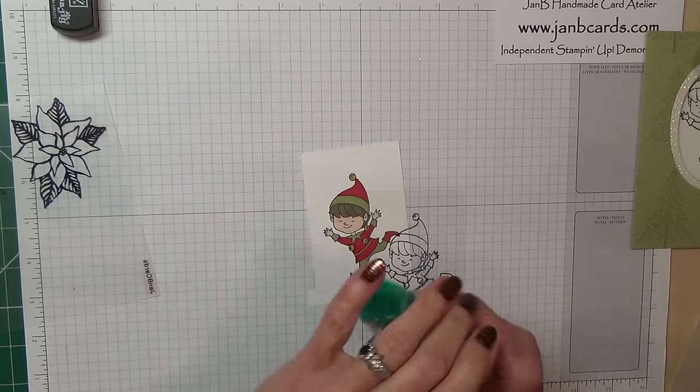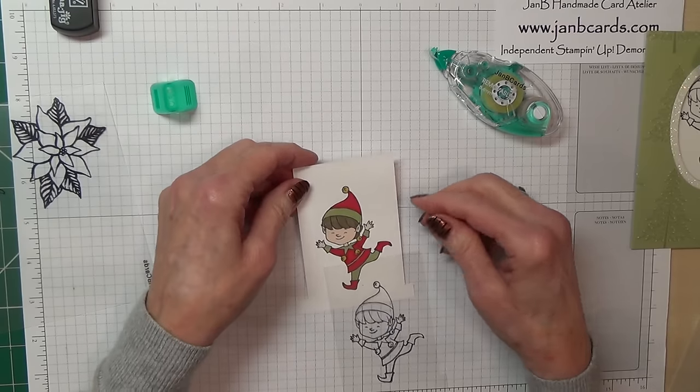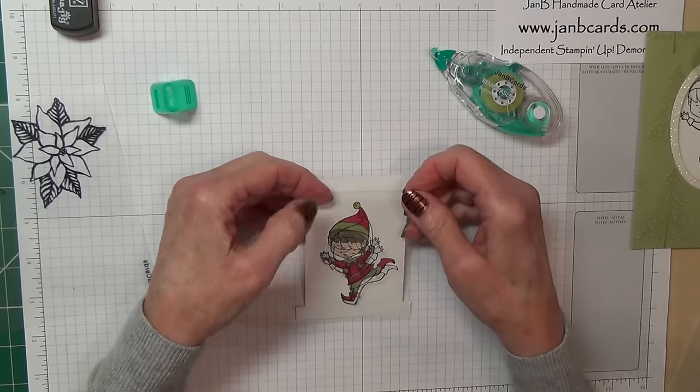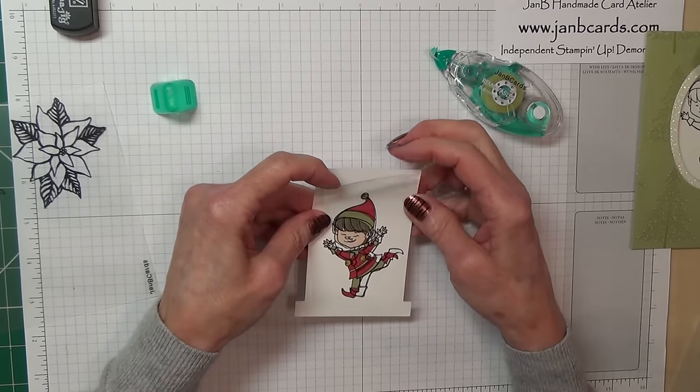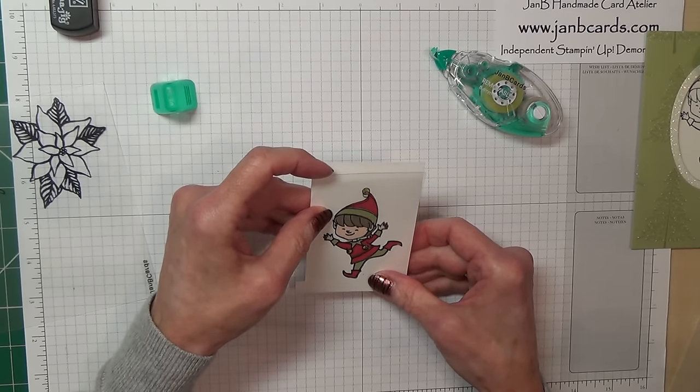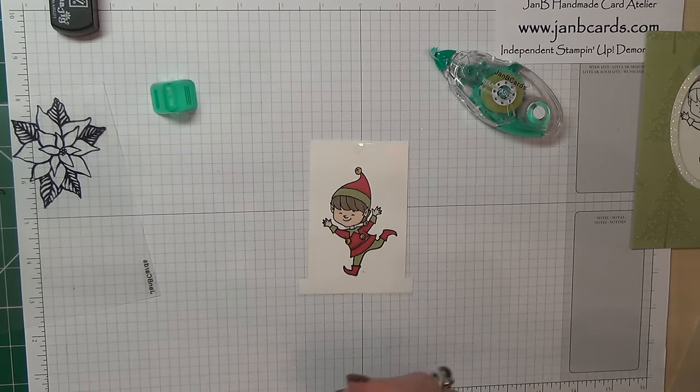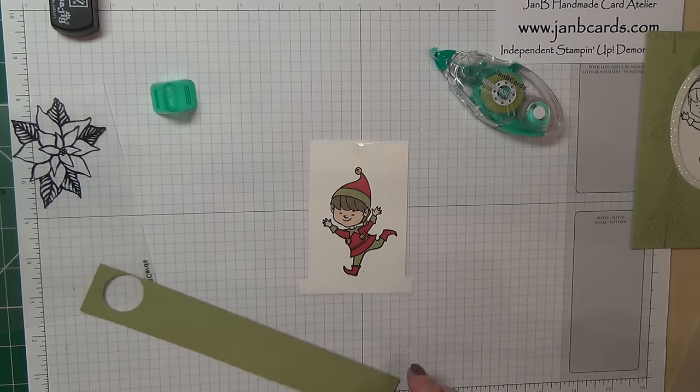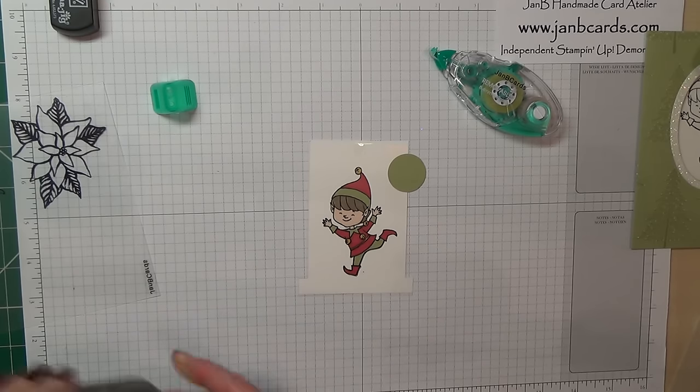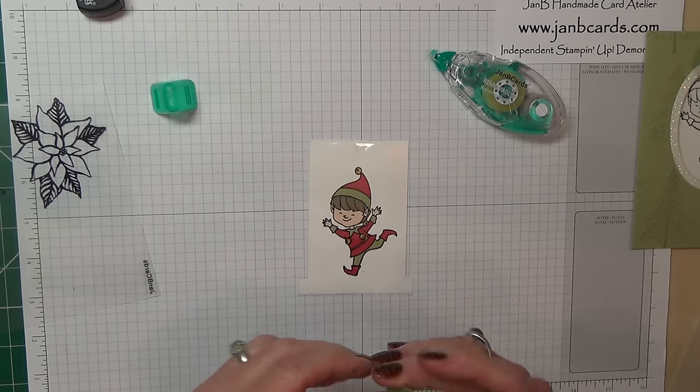Now I'm going to use a little bit of temporary adhesive just up here. This is not a Stampin' Up product. If you have snail, you can just put a little dab down and just keep putting your finger on it to take away a lot of the stickiness. We now need a one inch circle of Pear Pizzazz. Fold that in half and I tend to give mine a little bit of a curl first.